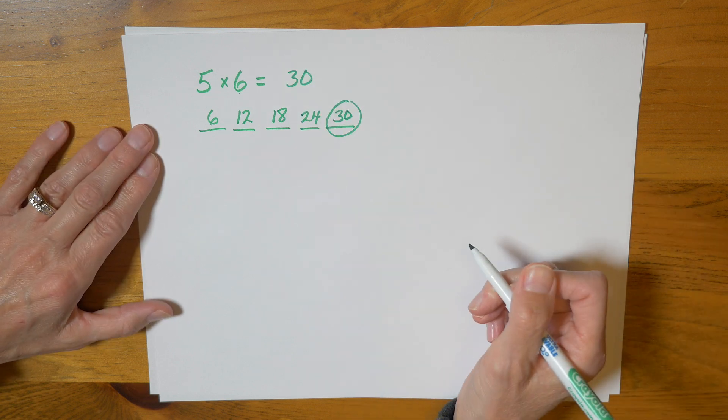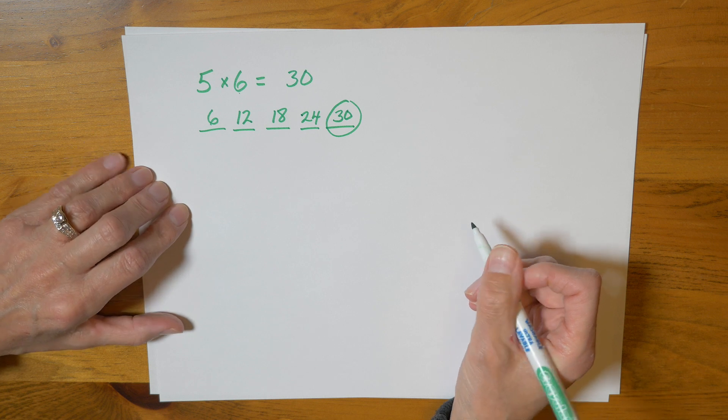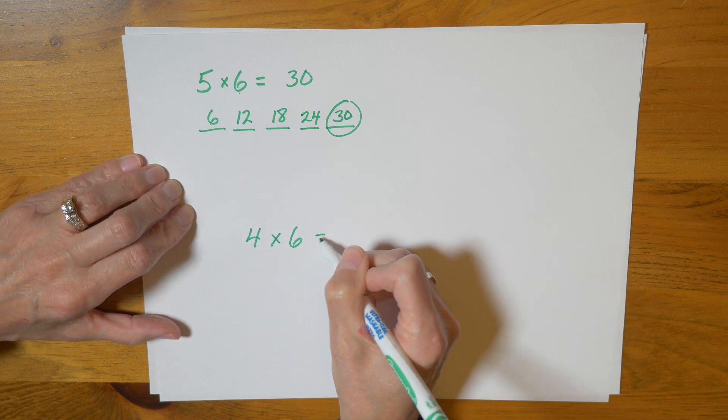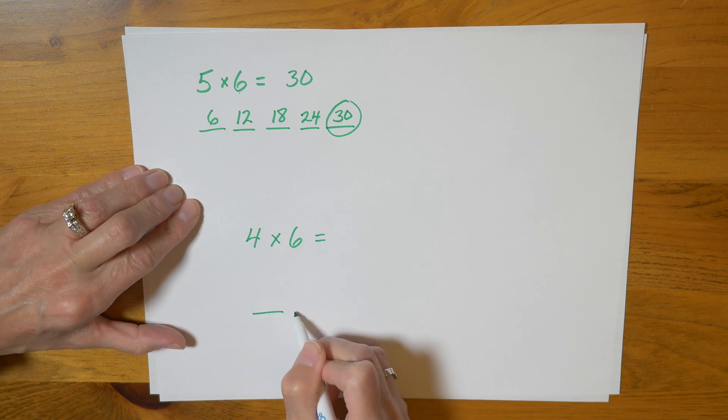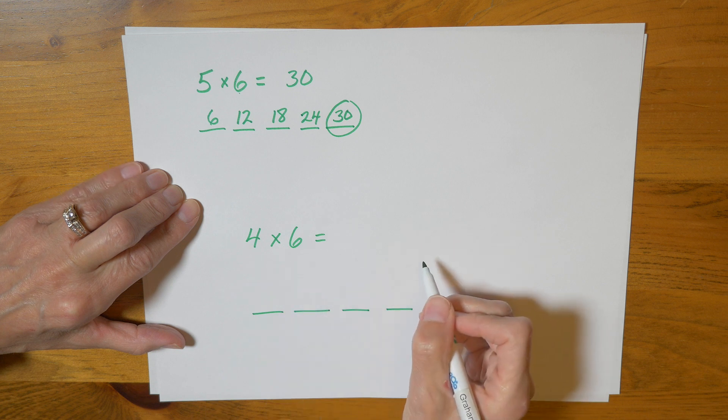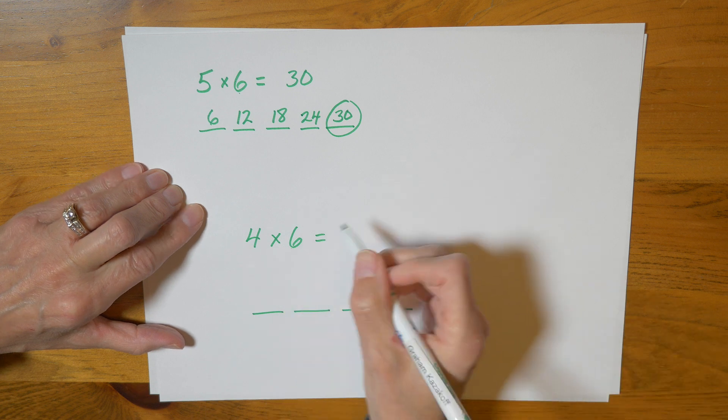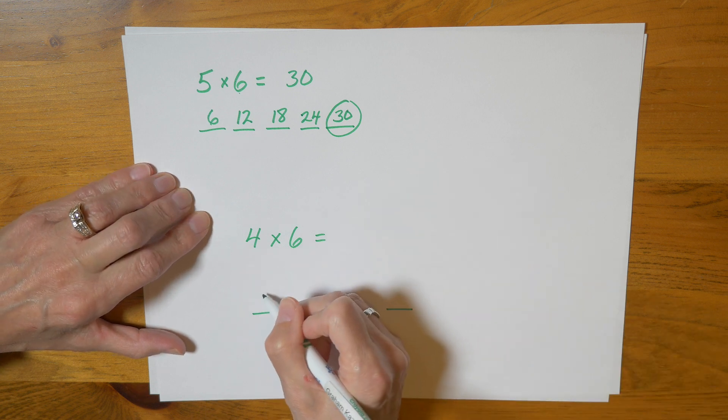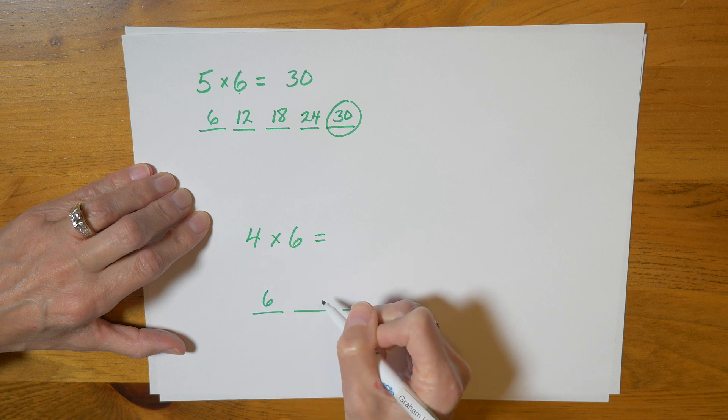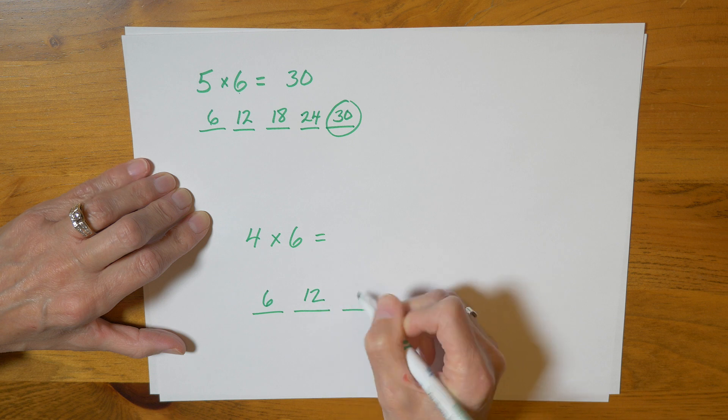And one more. Let's try four times six. So I'm going to give myself four spaces. And I'm going to count by sixes again. So six, twelve, eighteen, twenty-four.